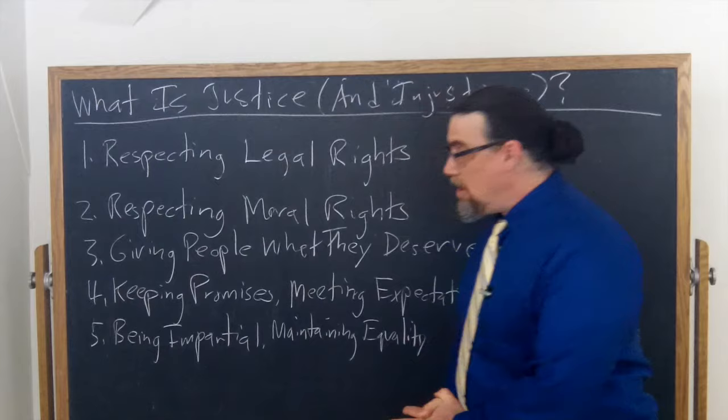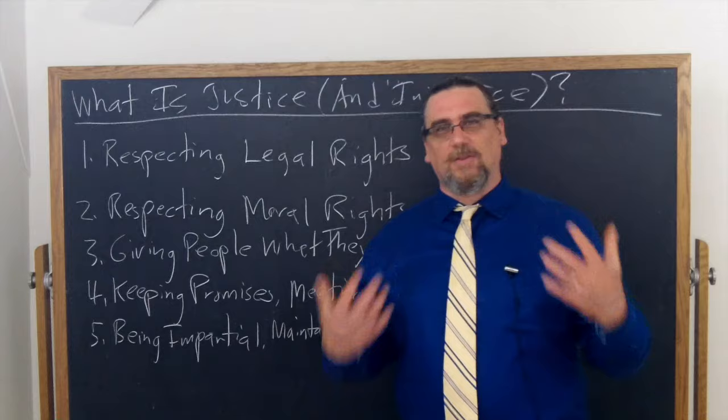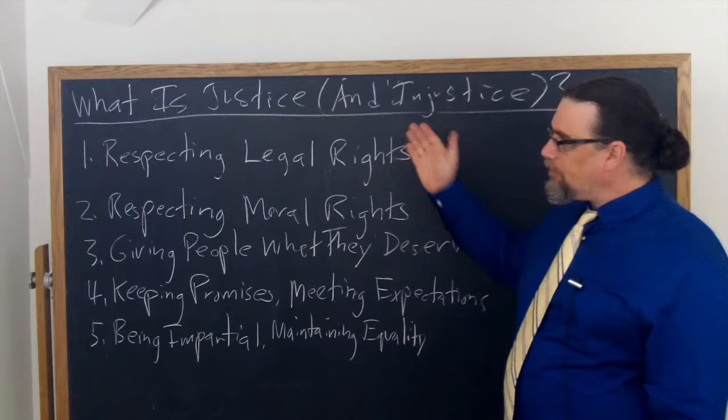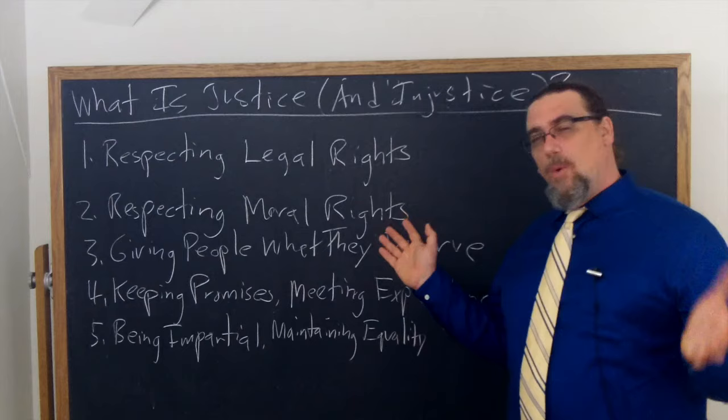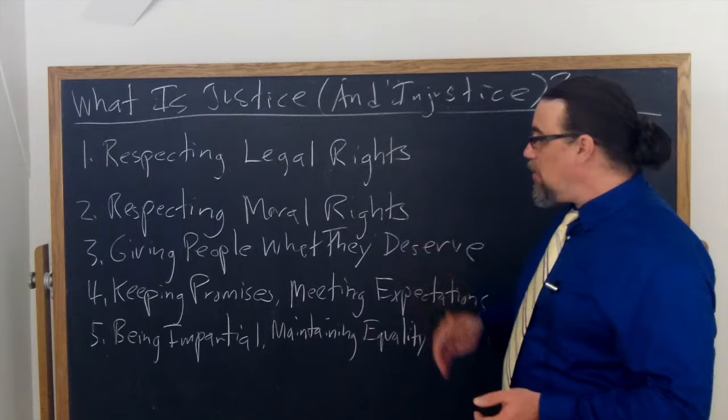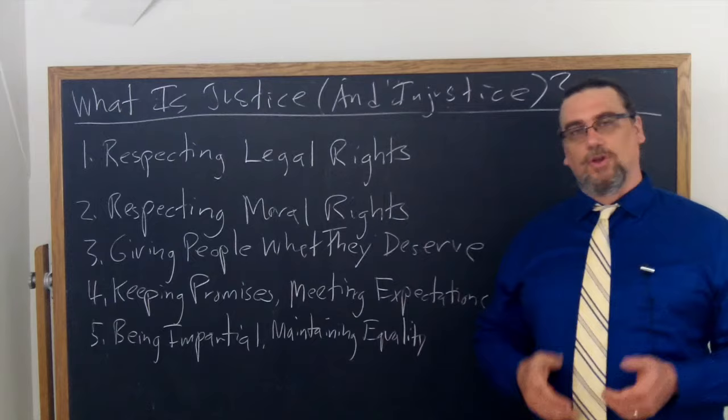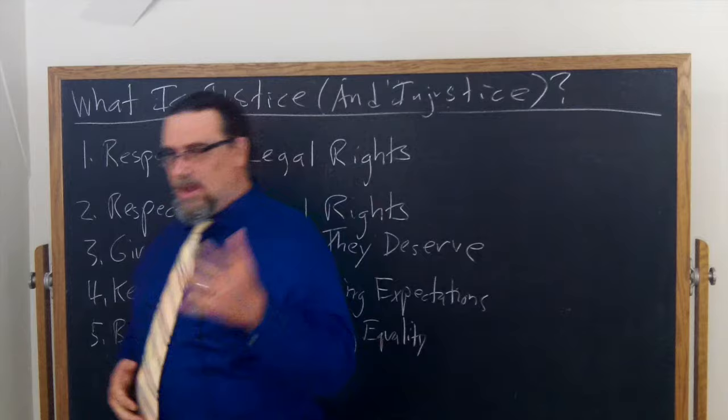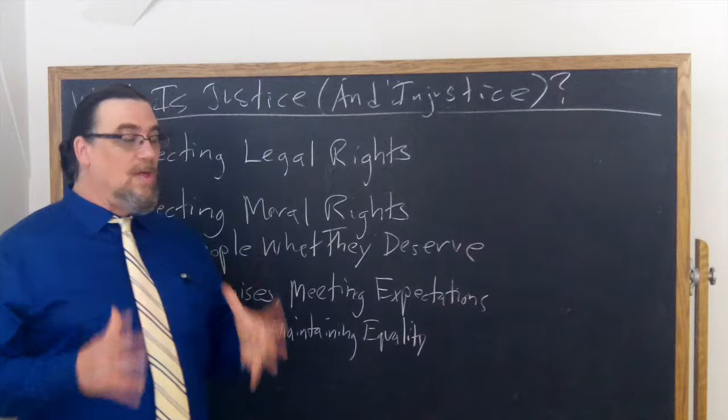So what are these five conceptions of justice that Mill says most people tend to have? One is respecting legal rights. Another is respecting a different kind of right — a moral right. Then there's giving people what they deserve, keeping promises or meeting expectations, and finally being impartial and maintaining equality of some sort between persons. He gives us a brief discussion of each of these in turn.